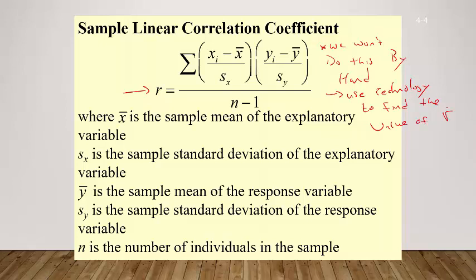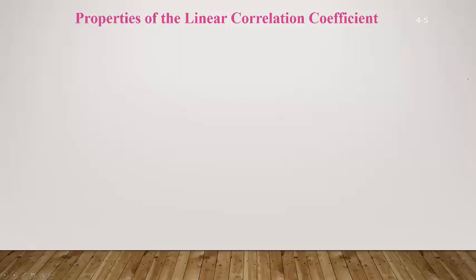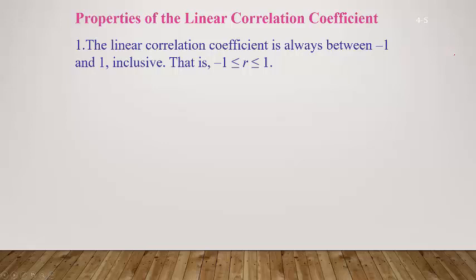I'm going to show you how to use your graphing calculator, so I encourage you to have it out and follow along. First, what are some properties of the linear correlation coefficient? Most importantly, R is always going to be between negative 1 and 1 inclusive — it could be negative 1, negative 0.5, 0, 0.25, or 1. You will never calculate a value like 5 or negative 7.